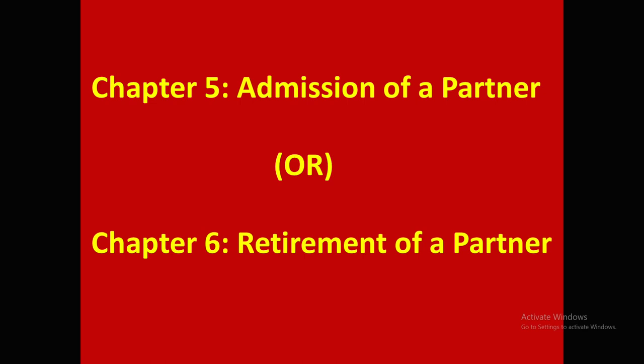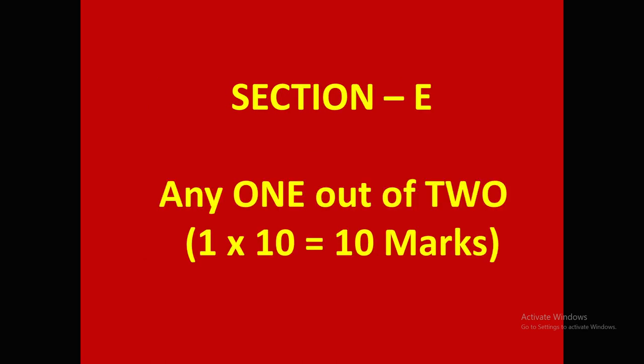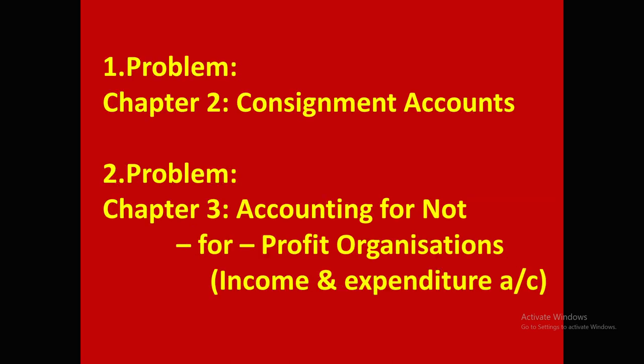The doubt is: from which chapter can we expect the 20-mark problem? 94% of the time, the question comes from Admission of a Partner; rarely from Retirement of a Partner. Next, Section E: 2 questions will be given; you have to attempt any one. That question carries 10 marks — 1 into 10 = 10 marks. In these two questions, the first one is a problem from Chapter 2, Consignment Accounts; the second question is a problem from Chapter 3, Accounting for Not-for-Profit Organizations, on the Income and Expenditure Account topic, for 10 marks.